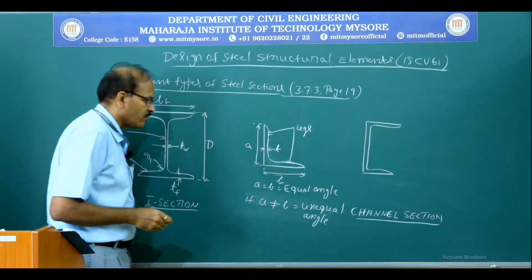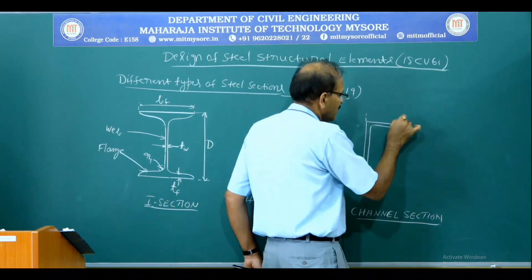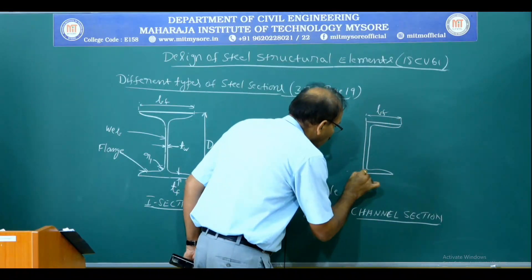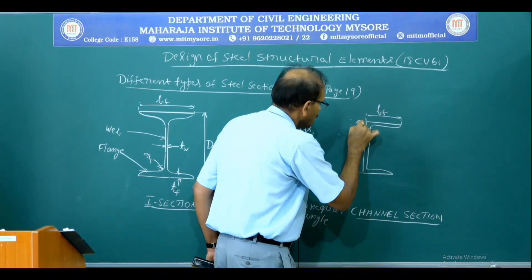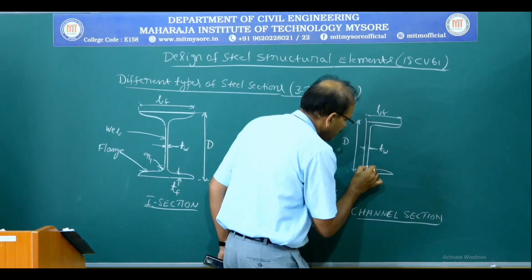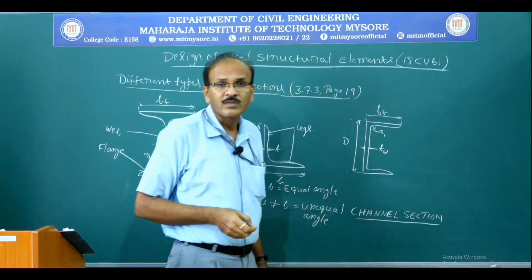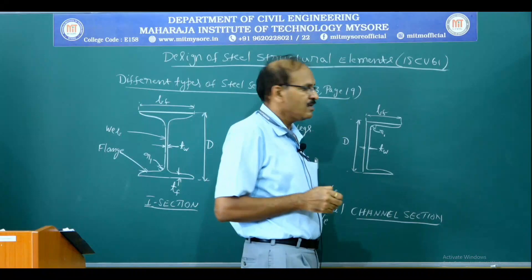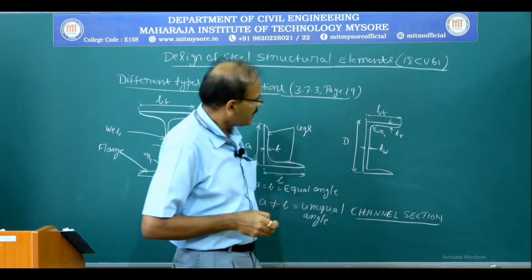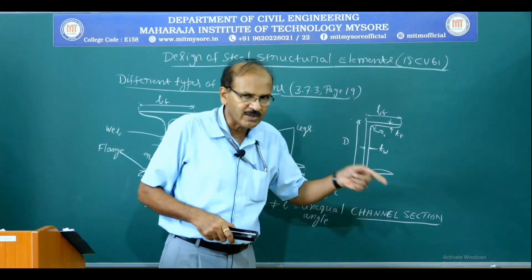We have two types: equal angle and unequal angle. Similarly, for the channel section, this is the width of the flange BF, this is the overall depth capital D, this is the thickness of the web TW, and R1 is the radius of the quadrant. This is the thickness of the flange TF. As mentioned, the thickness of the flange is not constant — it is variable — so whatever thickness we consider is the average thickness.